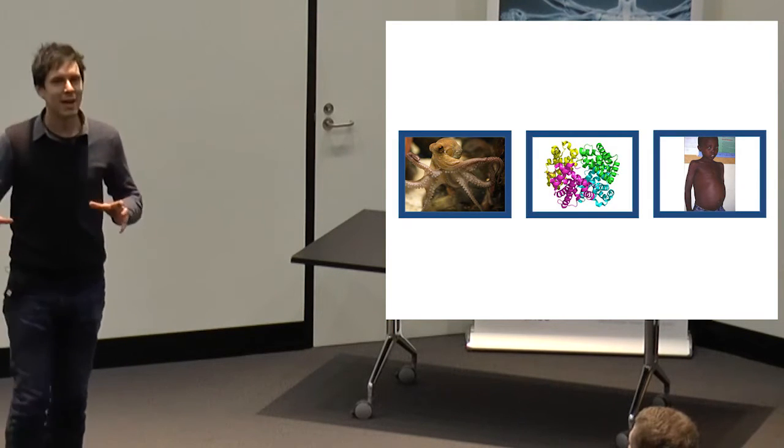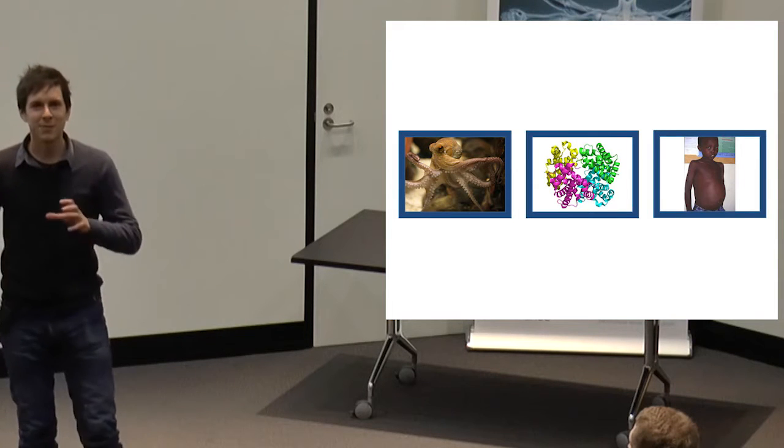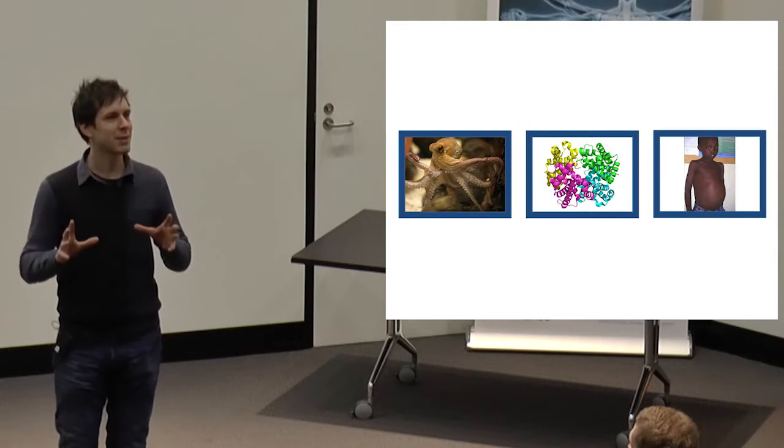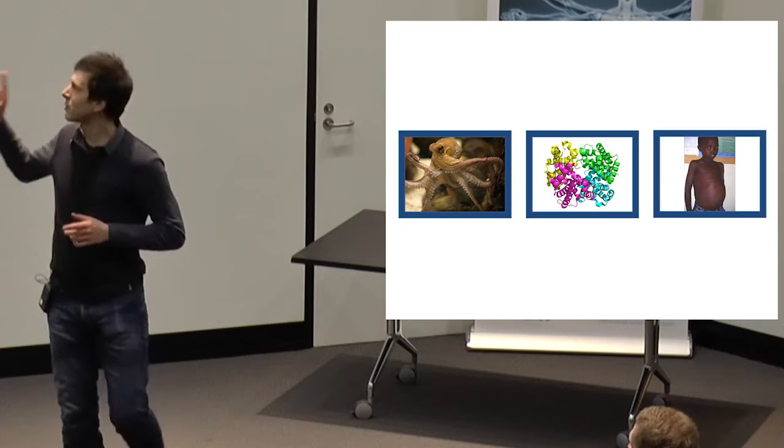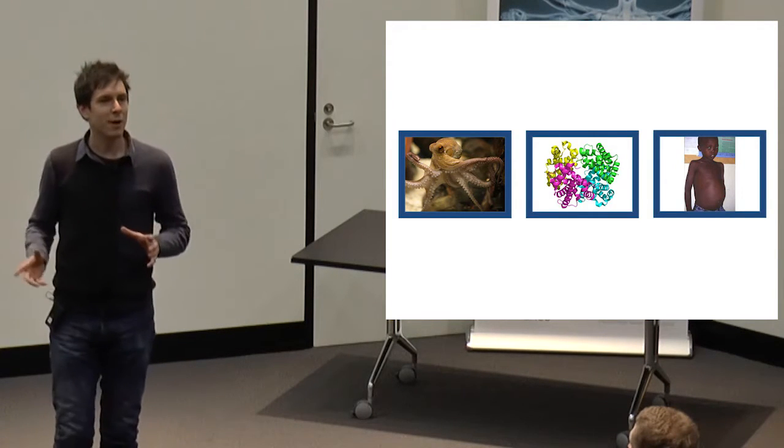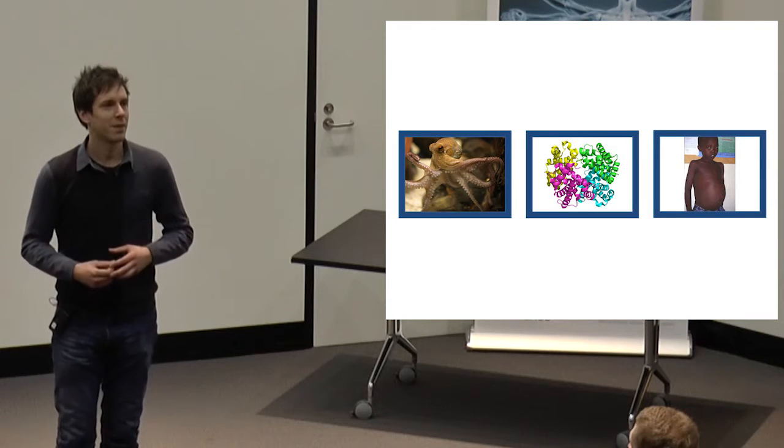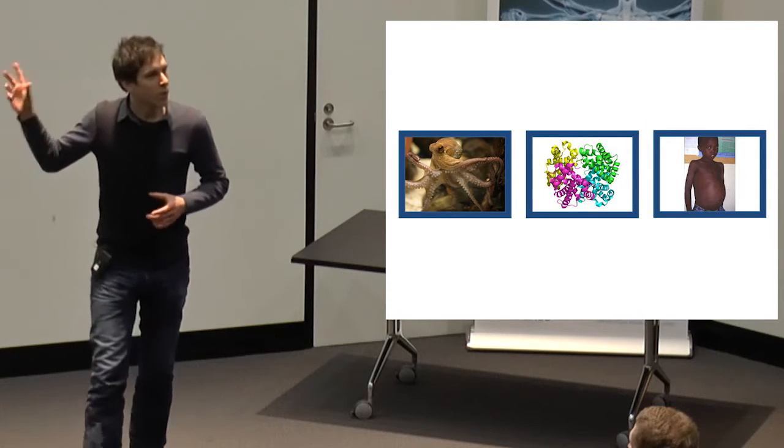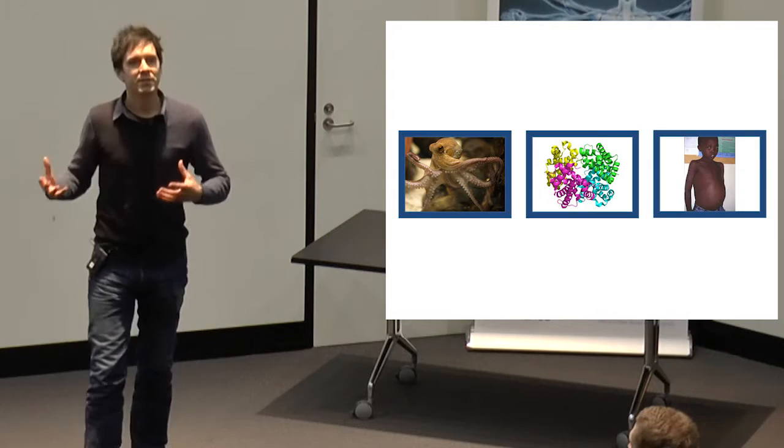As you're sitting there, you might be able to imagine how this octopus moves, the flexibility, the dexterity in those tentacles. What's really interesting about this is that there's actually nothing in this picture which lets you know about those movements you're now imagining. What you're imagining now is based on your previous experiences.